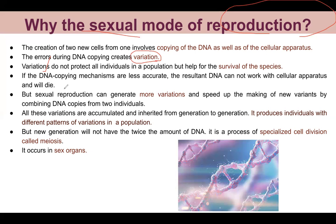Sexual reproduction creates more variations. The new variants produced are a better version of their parents. All these variations accumulate from generation to generation. DNA is passed from generation to generation through the cellular apparatus.